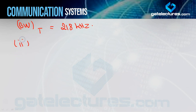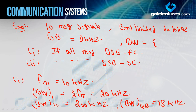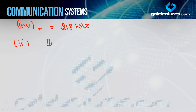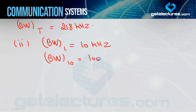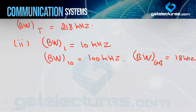For case (b) SSB-SC: the only change is that for SSB-SC, the modulated signal bandwidth equals FM (not 2×FM). So bandwidth of one signal = FM = 10 kHz. Bandwidth of 10 signals = 10×10 = 100 kHz. Guard band remains the same: 18 kHz. Total bandwidth = 100 + 18 = 118 kHz.